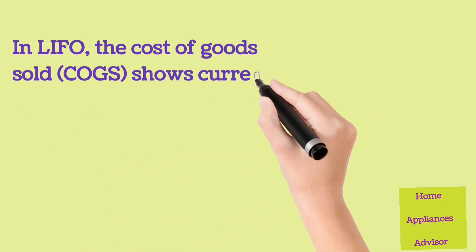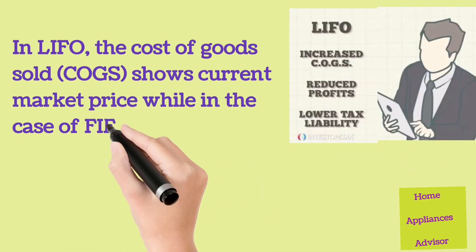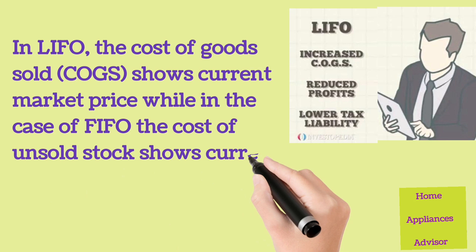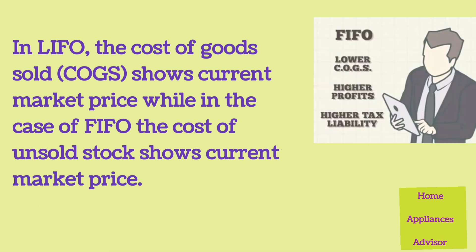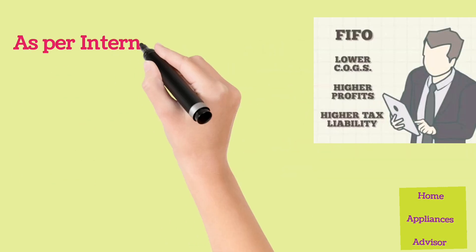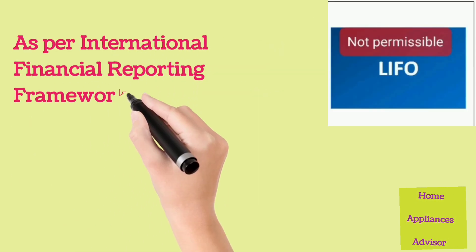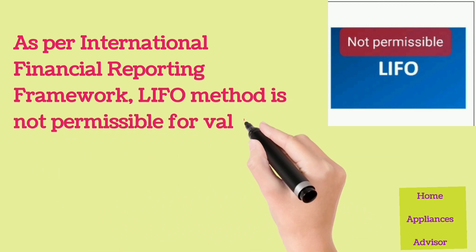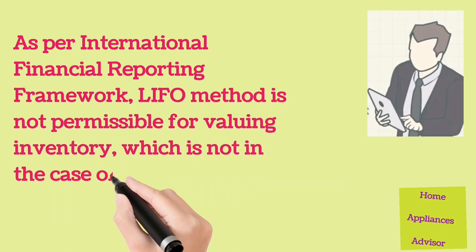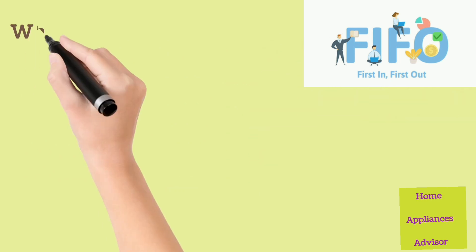In LIFO, the cost of goods sold (COGS) shows the current market price, while in the case of FIFO, the cost of unsold stock shows the current market price. As per the international financial reporting framework, the LIFO method is not permissible for valuing inventory, which is not the case with FIFO.